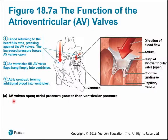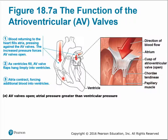As blood returns to the heart and fills the atria, it presses against the valves until it reaches a tipping point and forces them open, allowing blood to flow down into the ventricle. The atria then contract to force the remainder of the blood into the ventricle. When the ventricle contracts, the cusps snap shut, preventing any backflow into the atrium.